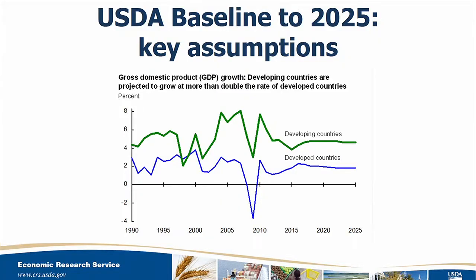USDA's annual baseline provides a framework to assess drivers of global markets. On February 19th, we released the market projections for 10 years out to 2025, and they are based on specific assumptions about macroeconomic conditions, policy, weather, and international developments, with no domestic or external shocks assumed to occur to global markets. The baseline assumes that current policies continue throughout the period, including the 2014 Farm Bill, and as such, this is one scenario based on a combination of our models and some expert judgment.